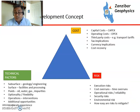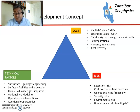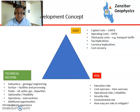To sum up: when you're selecting a development concept, you've got three basic sides of the triangle. You've got your costs — capital costs, operating costs, any third-party costs in terms of tariffs, tax implications, currency implications, and cost recovery if you're within a PSA environment — and all the fiscal implications that go with that. You also have your technical factors: subsurface, geology, and engineering. As geologists, that's what we concentrate on, but it's not everything. You also have your surface facilities and processing — including any 'nasties' within the field such as H2S or excess CO2 that you'll need to process and dispose of safely.